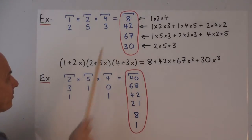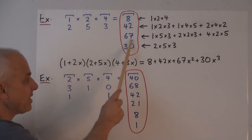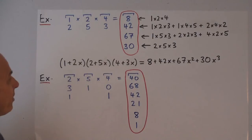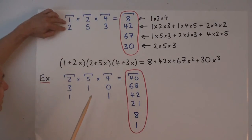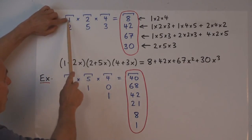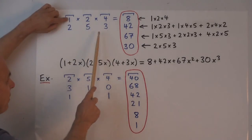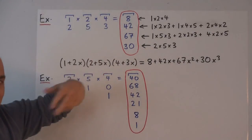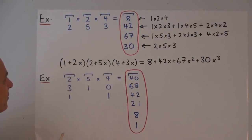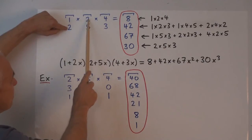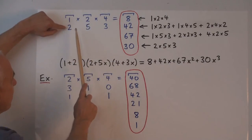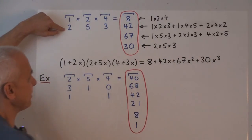The second degree term is obtained by taking products of three things so that the sum of the indices is now two. So that can be obtained by taking one times five times three. That's degree zero, that's degree one, that's degree one. So that has a total degree of two when we multiply. Or we could take two times two times three. Or we could take four times two times five. We add those three possibilities up, we get sixty-seven.